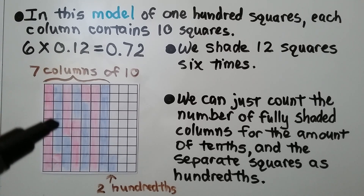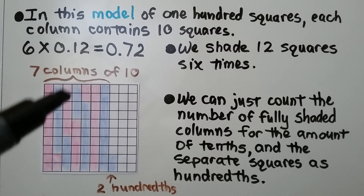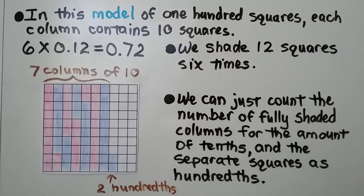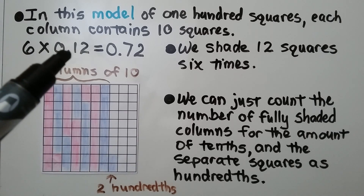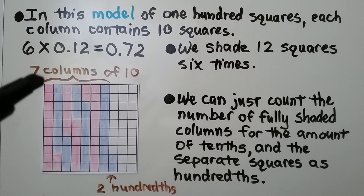Then we shade in 12 more, 12 more, 12 more — we do it six times total, shading the 12 squares six times. That's six times twelve-hundredths. We can count the number of fully shaded columns for the amount of tenths.